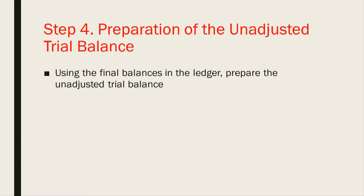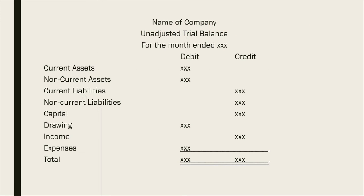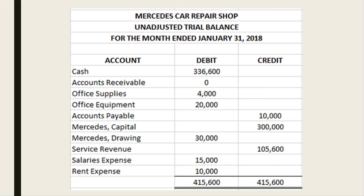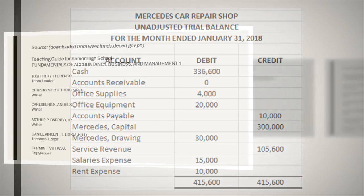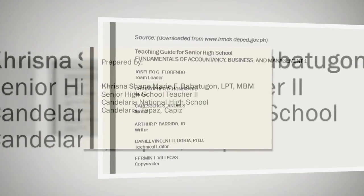We proceed to Step 4, the preparation of the unadjusted trial balance. The format includes current assets, non-current assets, current liabilities, non-current liabilities, capital, drawing, income, and expenses. This is the unadjusted trial balance of Mercedes Car Repair Shop for the month ended January 31, 2018. Thank you very much and have a good day.